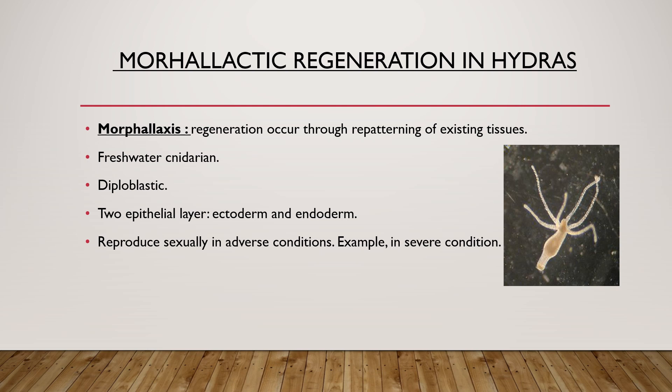The last type is morpholactic regeneration in hydras. Morpholaxis is regeneration through repatterning of existing tissues. Whenever a part of a complete organism is lost, it regenerates following the same pattern as before. Hydra is a freshwater cnidarian. It is diploblastic, meaning it has two germ layers — ectoderm and endoderm — and it reproduces sexually in adverse conditions such as severe crowding.